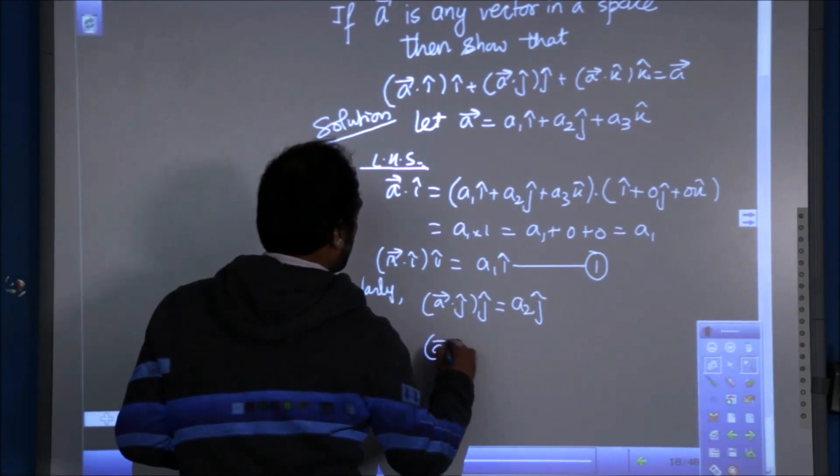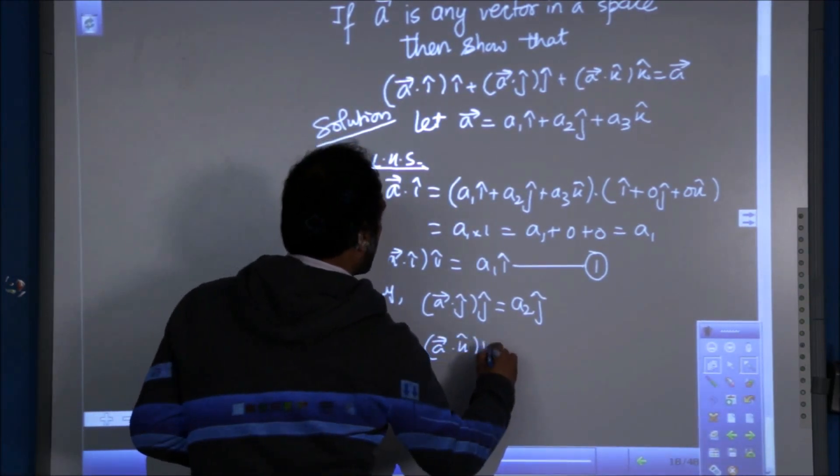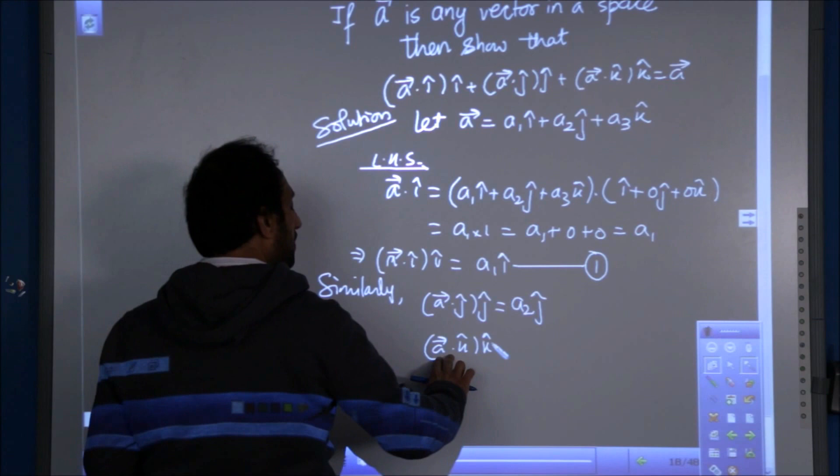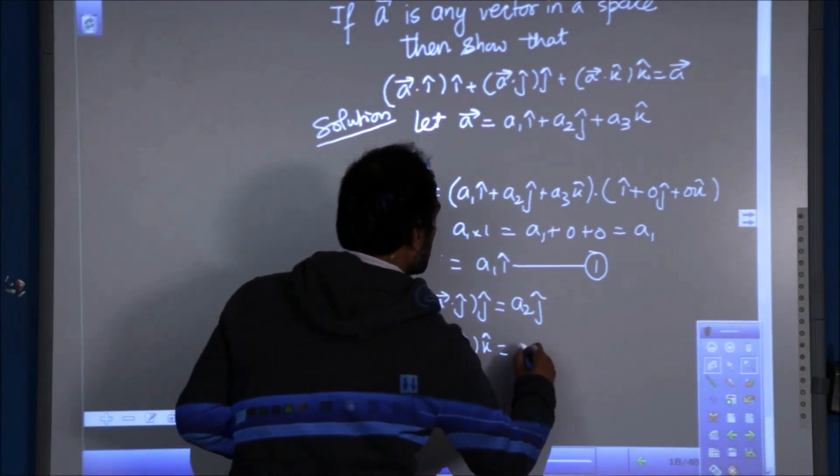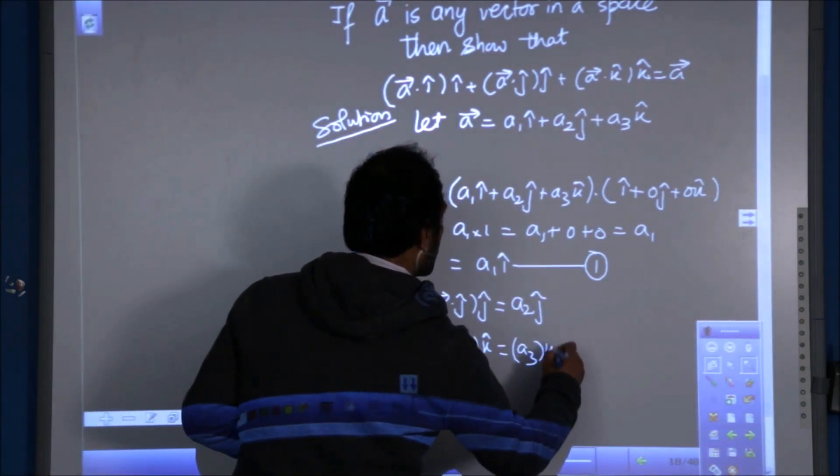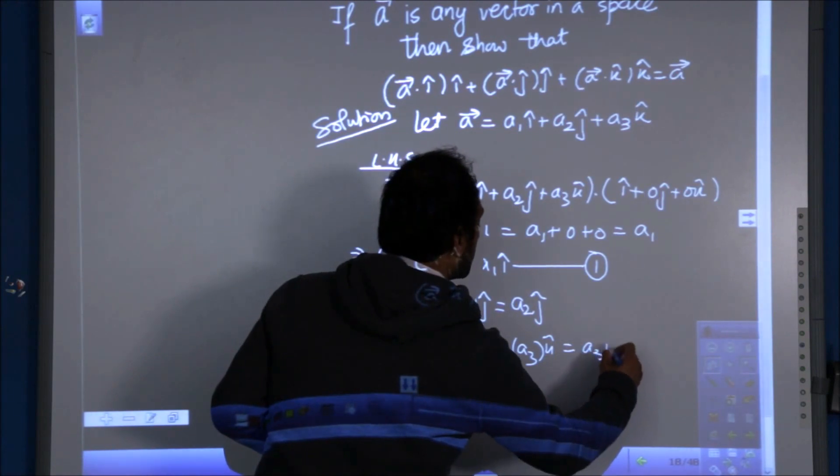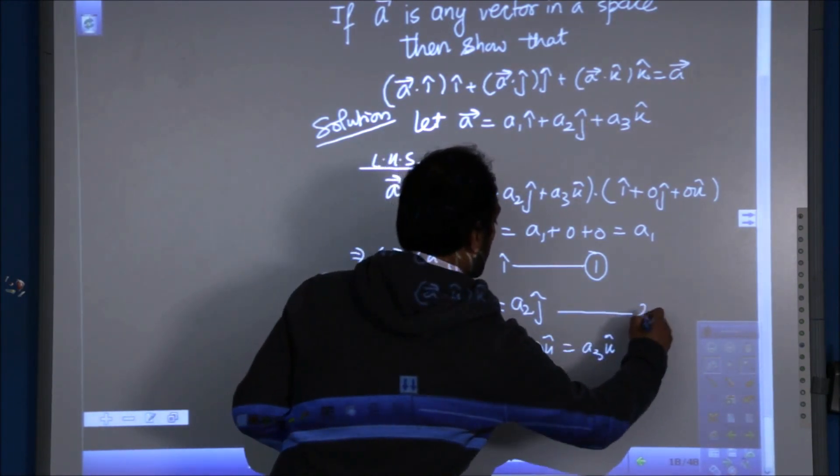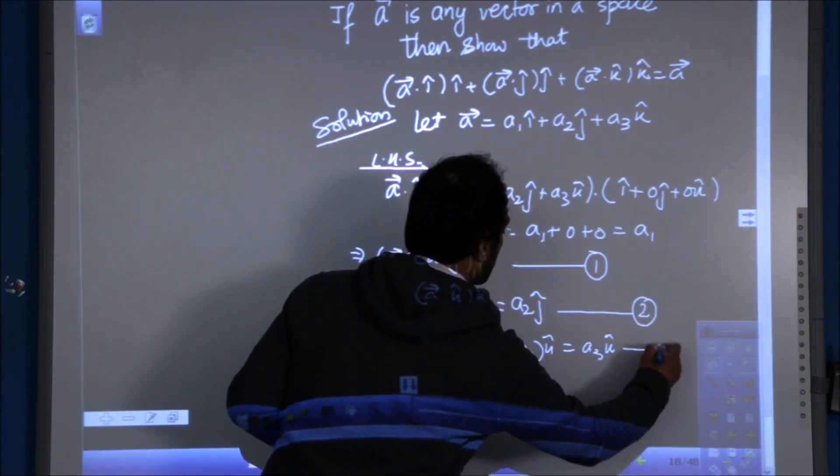And a dot k with k. So the result of a dot k will be a3. So a3 with k will simply be a3k. So this is equation number 2. This is equation number 3.